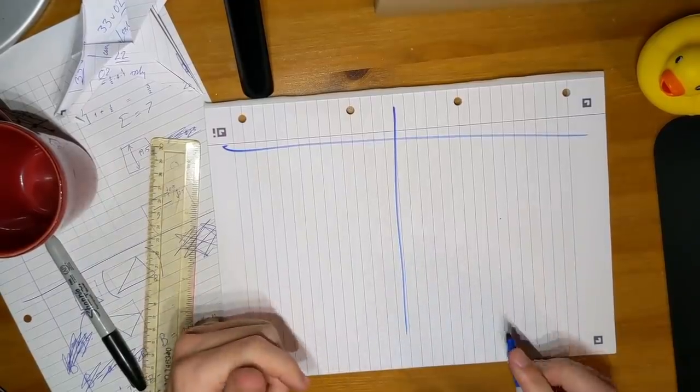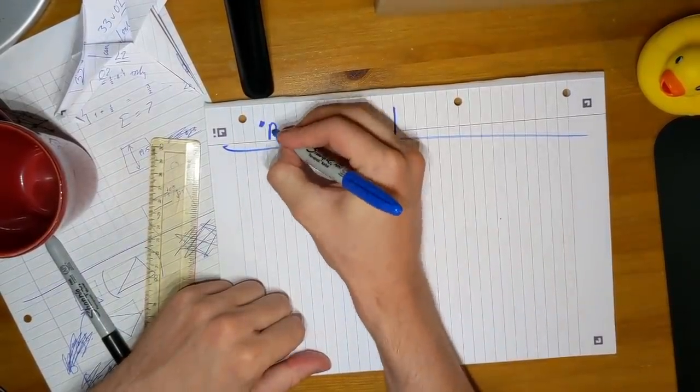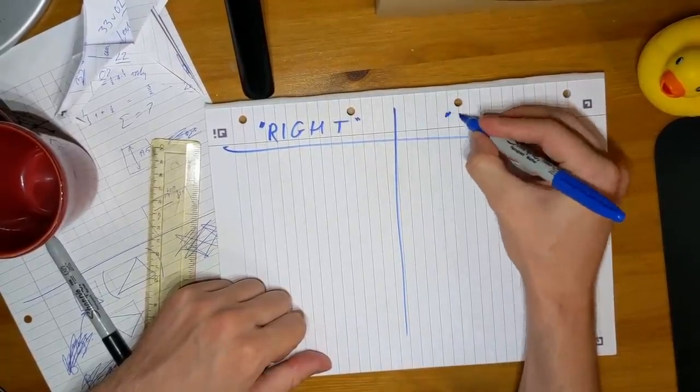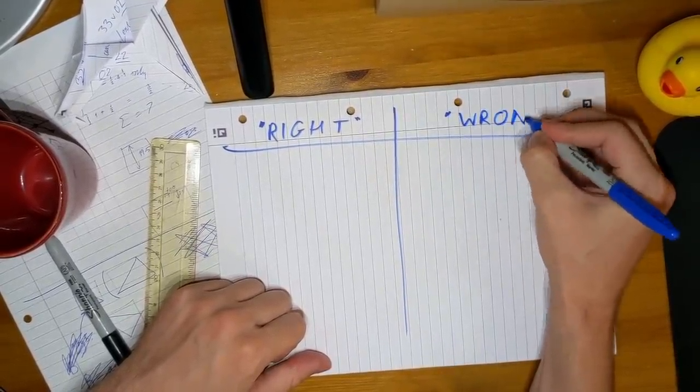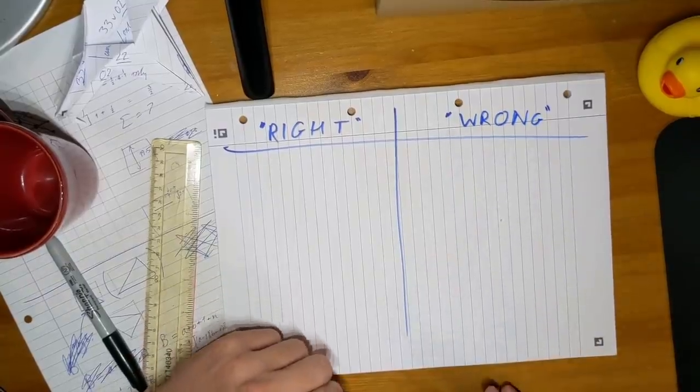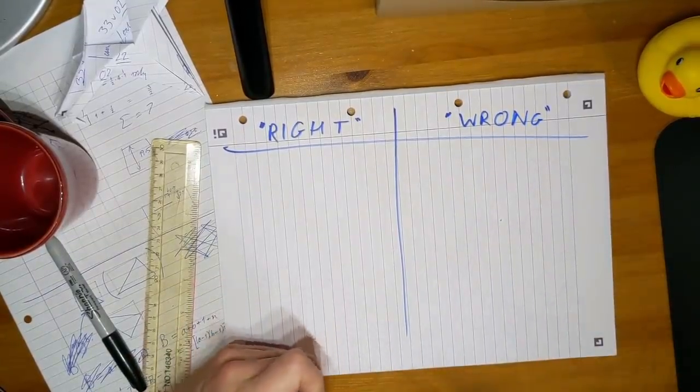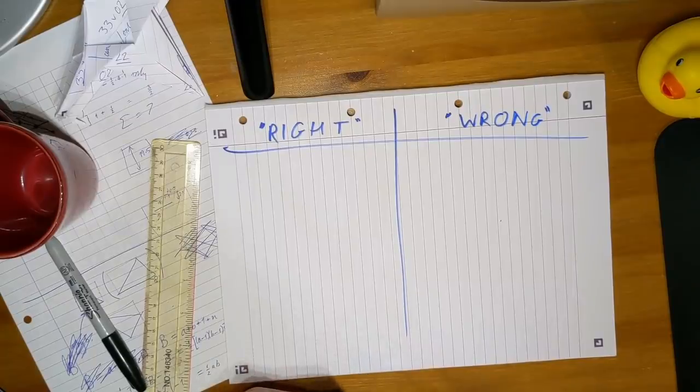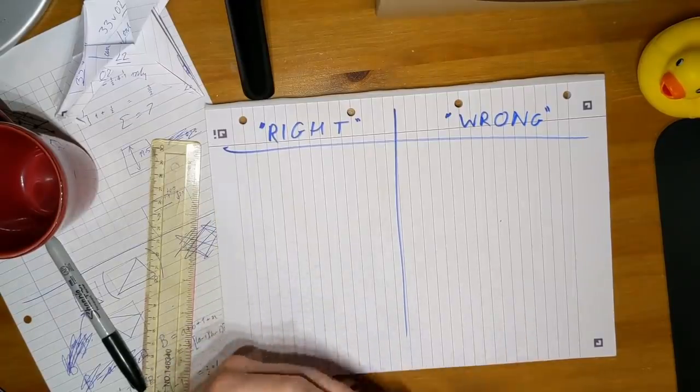So when I was first shown this theorem, the professor lecturing me told me that there were two ways to prove it: the right way and the wrong way. Now, this video is not about the right way. The version of that proof appeared on PBS's excellent channel Infinite Series a few years ago, so go and watch that video instead if you like.